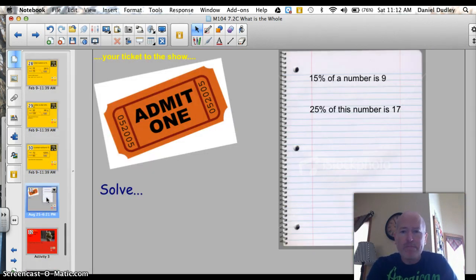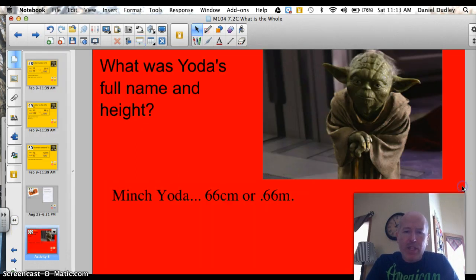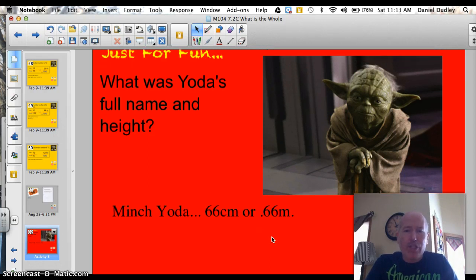Here's your ticket for the show. Go ahead and write that down. 15% of a number is 9. 25% of this number is 17. Two different problems. Our ticket. What was Yoda's full name and height? Actually, his full name was Minch Yoda and he was 66 centimeters. Or, if we think back just to last chapter, 66 centimeters is 0.66 of a meter. Thanks for watching tonight. I hope you enjoyed the Star Wars trilogy and learned how to use the box, Luke. Use the box.